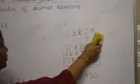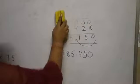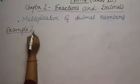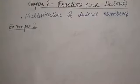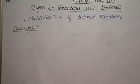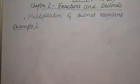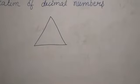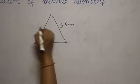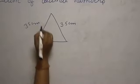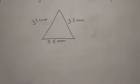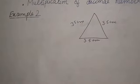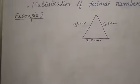Now Example number 2 from your book, page 48. The side of an equilateral triangle is 3.5 cm. Find its perimeter. An equilateral triangle has all equal sides — so all three sides are 3.5 cm. The perimeter is the sum of the lengths of all its sides.